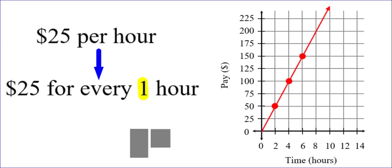Let's apply that to a graph. $25 per hour means $25 for every 1 hour. If you go to the graph when x is 1 and look at the point at that location, notice what the y value is. It is 25. This is the idea: $25 for every 1 hour, or $25 per hour.